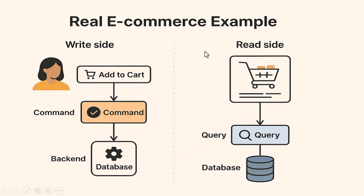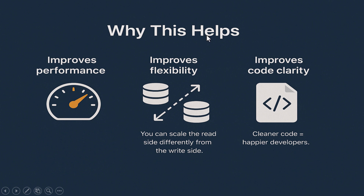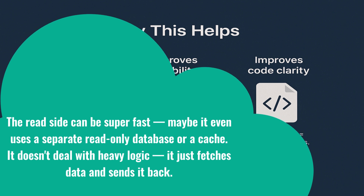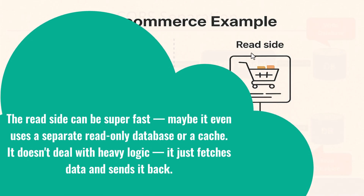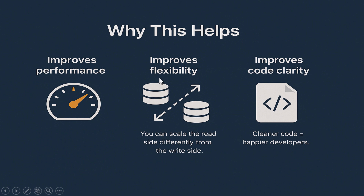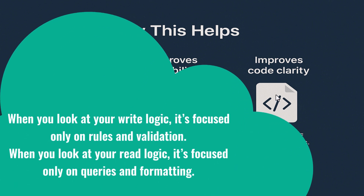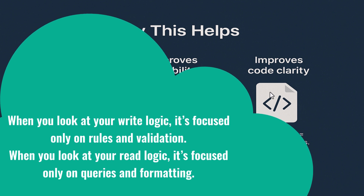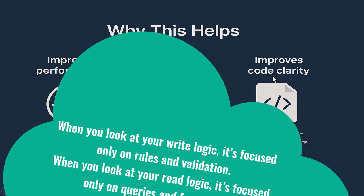Why is the CQRS pattern useful? First, it improves performance. The read side can be super fast — maybe it even uses a separate read-only database or a cache. It doesn't deal with heavy logic; it just fetches data and sends it back. Second, it improves flexibility. You can scale the read side differently from the write side. Maybe your reads are 100 times more frequent than writes — now you don't need to scale everything, just the part that needs it. Third, it improves code clarity. When you look at your write logic, it's focused only on rules and validation. When you look at your read logic, it's focused only on queries and formatting.